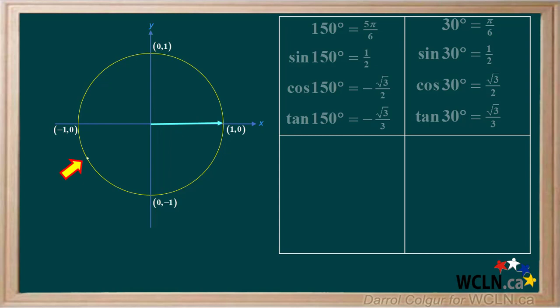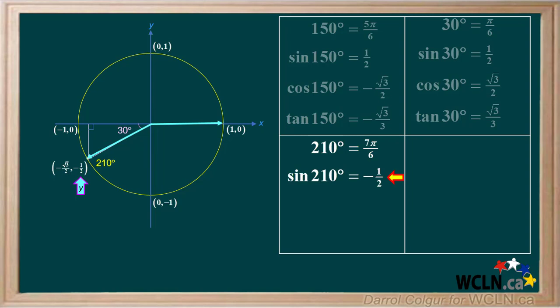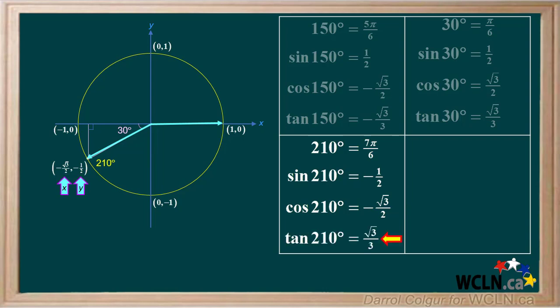Now we'll add a mark in quadrant 3. This corresponds to a principal angle of 210 degrees. We'll add an arrow to show the terminal arm. The coordinates for this point are negative root 3 over 2 for X and negative 1 half for Y. 210 degrees is equal to 7 pi over 6 radians. We'll draw in a right triangle, and we see that the reference angle for 210 degrees is 30 degrees. The sine is Y over R, which is negative 1 half. The cosine is X over R, which is negative root 3 over 2. The tangent is Y over X, which is negative 1 half divided by negative root 3 over 2, working out to positive root 3 over 3. Notice the tangent is positive while the sine and cosine are both negative. This is true for any angle in quadrant 3.